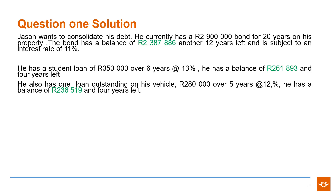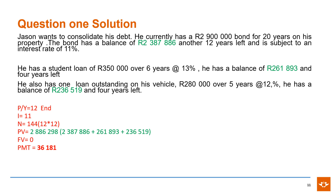To calculate Jason's new monthly payment once he has consolidated his debt, you take the outstanding balances of the bond, the student loan, and the vehicle loan as given in the question — that will be your present value for the calculation. The bond has 12 years remaining on its term. So you use N as the balance of that term: 12 years, monthly payments, times 12, gives you 144 as your N. You should get a payment of R36,181.